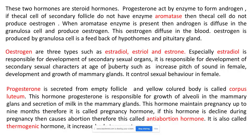Progesterone is responsible for the growth of alveoli in the mammary glands and for the secretion of milk in the mammary glands. The corpus luteum — the empty follicle — secretes progesterone. This hormone maintains pregnancy for up to 9 months and is therefore called the pregnancy hormone. If the level of progesterone declines during pregnancy, it causes abortion; therefore it is also called the anti-abortion hormone. It is additionally called a thermogenic hormone because it increases body temperature.